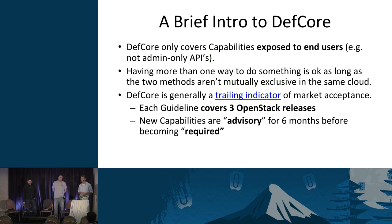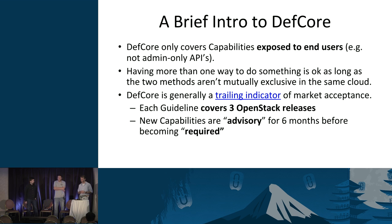Having more than one way to do something is actually OK. The classic use case is when a project has more than one version of an API — for instance, uploading images via either the Glance V1 or V2 API. What we care about is that capabilities meet those 12 criteria and are actually exposed to end users. Every guideline that DefCore produces covers three OpenStack releases — the most recent three. A capability won't go into the DefCore guidelines until it's been present in three OpenStack releases, giving it time to mature.